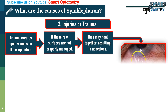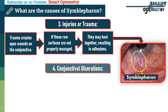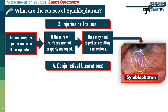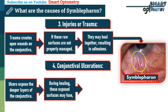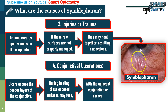4. Conjunctival Ulcerations: ulcers expose the deeper layers of the conjunctiva. During healing, these exposed surfaces may fuse with the adjacent conjunctiva or cornea, leading to adhesion.